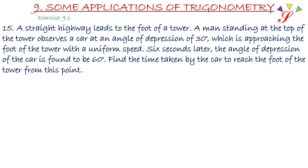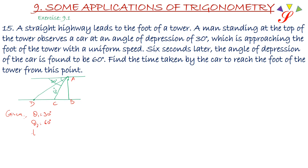A straight highway leads to the foot of a tower. A man standing at the top of the tower observes a car at an angle of depression of 30 degree, which is approaching the foot of the tower with uniform speed. Six seconds later, the angle of depression of the car is found to be 60 degree. Let's name the points A, B, C and D. Given: theta 1 = 30 degree, theta 2 = 60 degree. The time to travel from point D to C is 6 seconds.